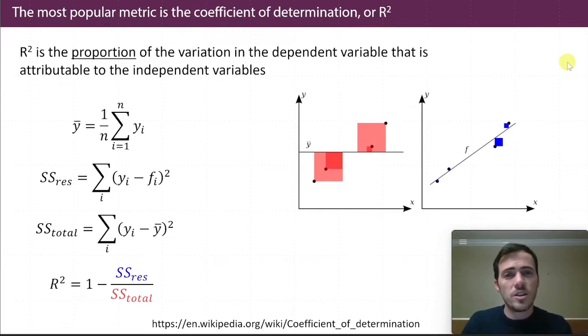Well, it's a percentage because of how it gets calculated. It's defined as the proportion of the variation in your dependent variable. That's the Y value that can be attributed to the independent variables, right?